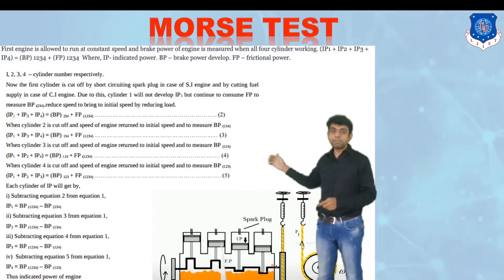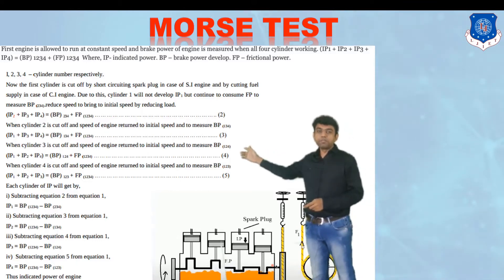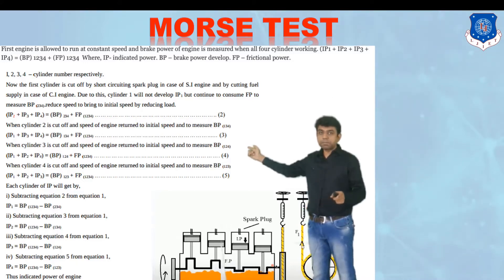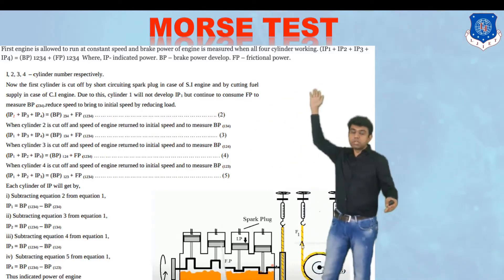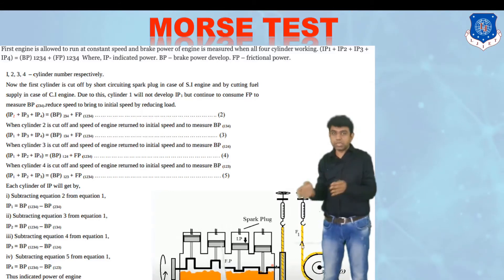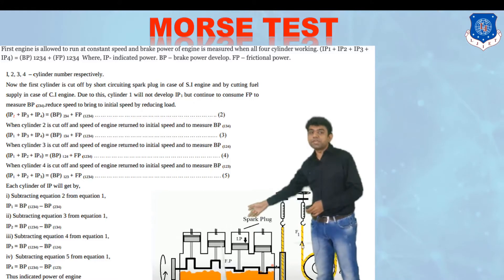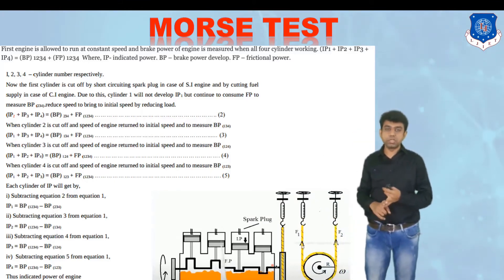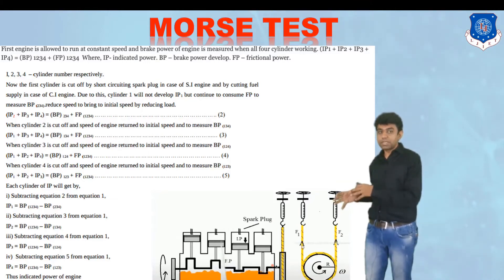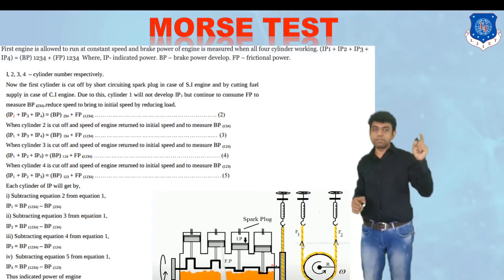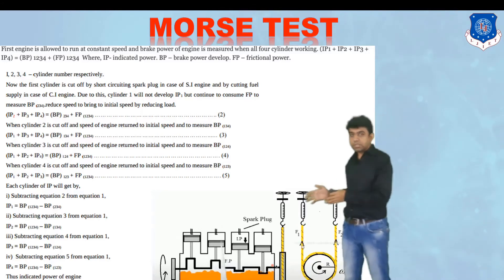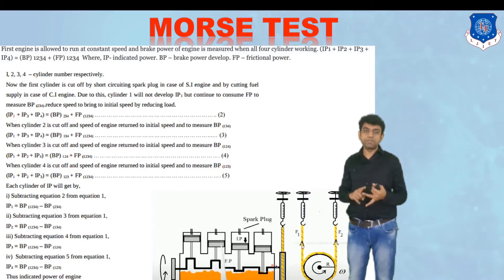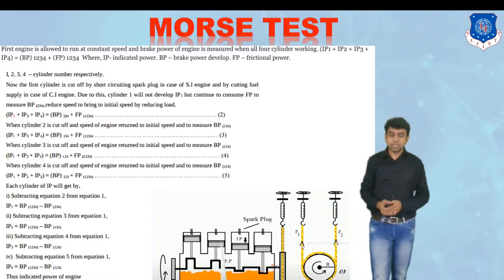We repeat this process for cylinders two, three, and four. When cylinder two is cut off: Indicated Power (1+3+4) = Brake Power (1+3+4) + Friction Power (1+2+3+4). Subtracting from the main equation gives the indicated power of cylinder two. The same approach yields indicated power for cylinders three and four. Summing all four indicated powers gives the total indicated power of the multi-cylinder engine.